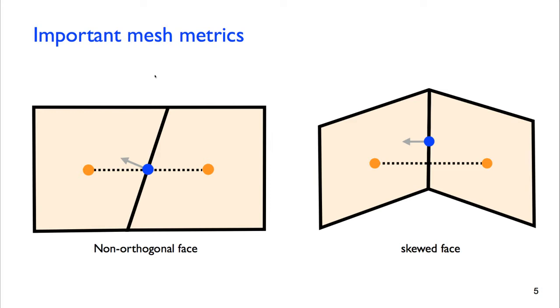Some important mesh metrics. Face non-orthogonality. If we take two adjacent cells and we join their centers with a line and we compare that line with the face normal, if they're at an angle, this angle measures how non-orthogonal that face is. Ideally we want this normal to be parallel to this line.